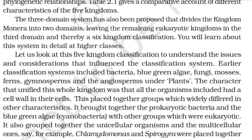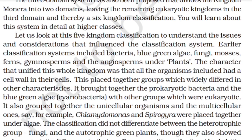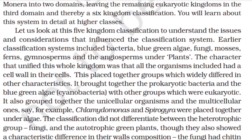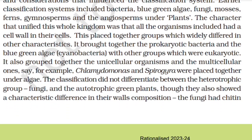An earlier classification system included bacteria, blue-green algae, fungi, mosses, ferns, gymnosperms, and angiosperms all under plants. The character that unified this whole kingdom was that all organisms included had a cell wall. This placed together groups which widely differed in other characteristics — it brought together the prokaryotic bacteria and blue-green algae (cyanobacteria) with eukaryotic groups, and also grouped together unicellular and multicellular organisms; for example, Chlamydomonas and Spirogyra were placed together under algae.